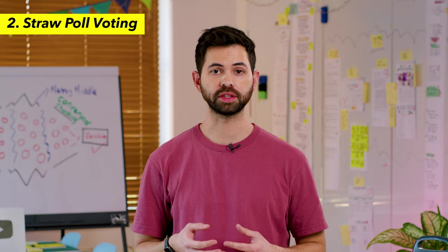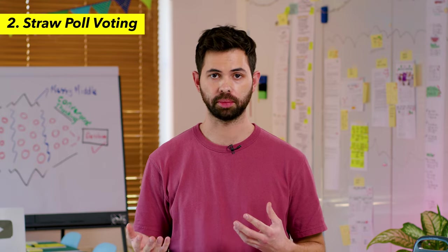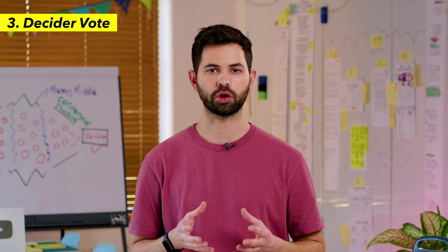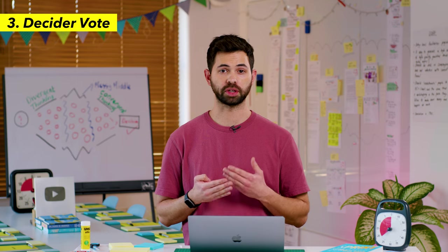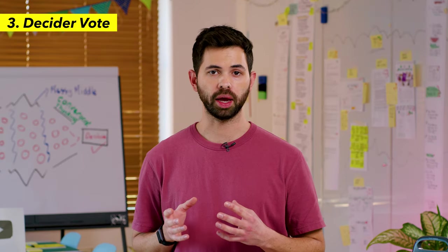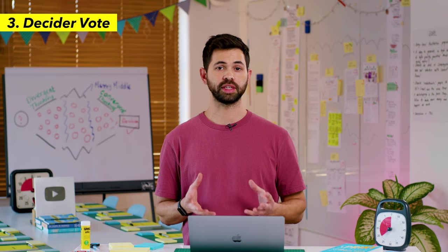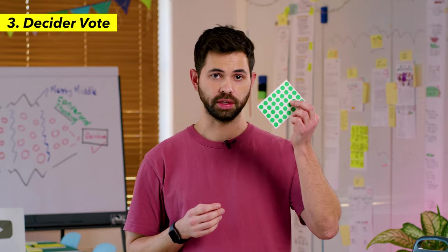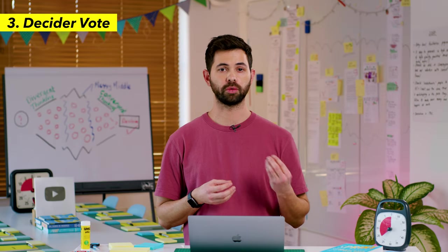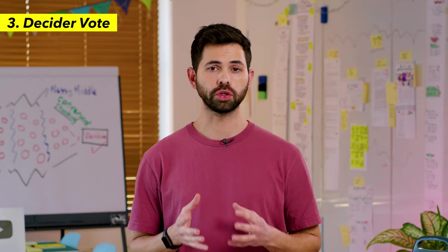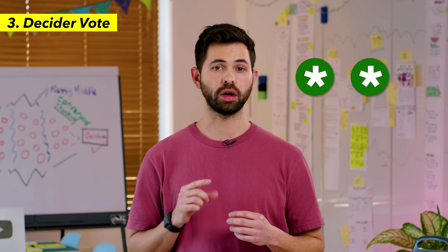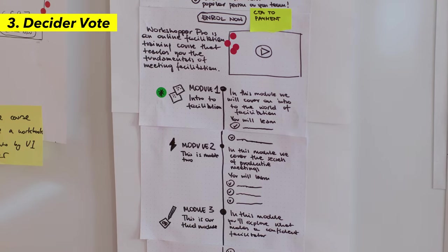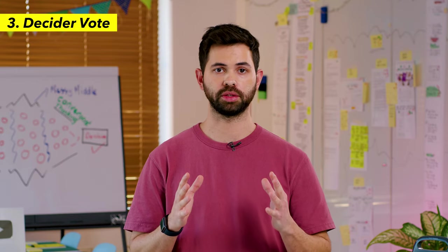Now that participants have explained the reason behind choosing a specific concept, it's time to move on to the decider vote. The decider vote is one of the most important parts of the workshop because once the decider chooses a concept, the team will take it away and start working on implementing it. You as the facilitator should give the decider one final vote with their initial on it and ask them to put it on the winning concept of their choice. Also, give them two additional votes with stars on them that they can use to highlight any area from other concepts that they really like and want to bring into the winning concept.